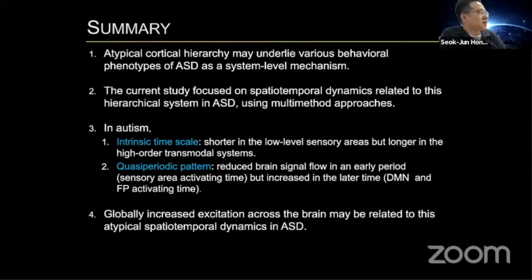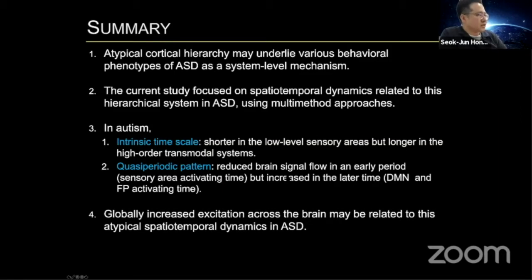To summarize: atypical cortical hierarchy may underlie various behavioral phenotypes of ASD as a system-level mechanism. In autism, intrinsic time scale was shorter in low-level sensory but longer in high-order transmodal systems. QPP shows reduced brain signal flow in early periods when sensory areas are maximally activated but increased at later times when DMN and frontal-parietal networks are maximally activated. Globally increased excitation across the brain may relate to these atypical spatial-temporal dynamics in ASD.